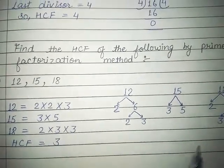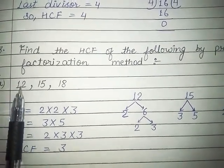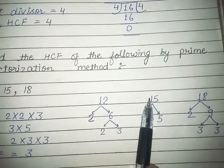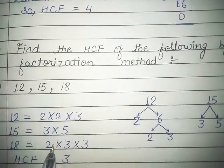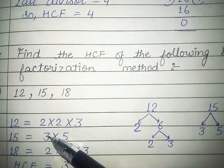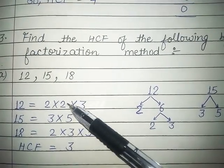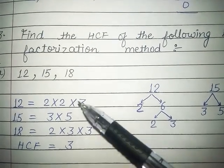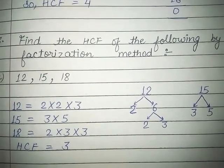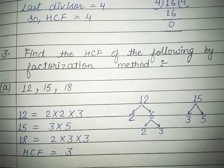Next, we will find out the HCF by prime factorization method. This is the same method that we did in the first question, but here we have three numbers: 12, 15, and 18. Solve the first one, then the rest. So what will be your HCF? You will solve Exercise 3.3, solving all three sums. Solve all parts properly.